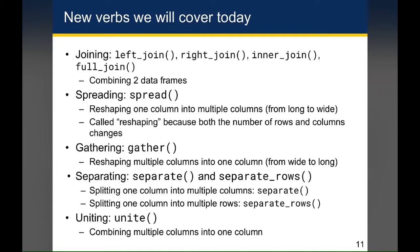Separate, separate rows, and unite are verbs that we use to handle situations where one cell contains multiple pieces of information. We can use separate or separate rows to get that out. And occasionally we have a situation where we want to look at data that's less granular — for example, combining first name and last name — and that's where unite comes in, which helps us combine multiple columns into one column.